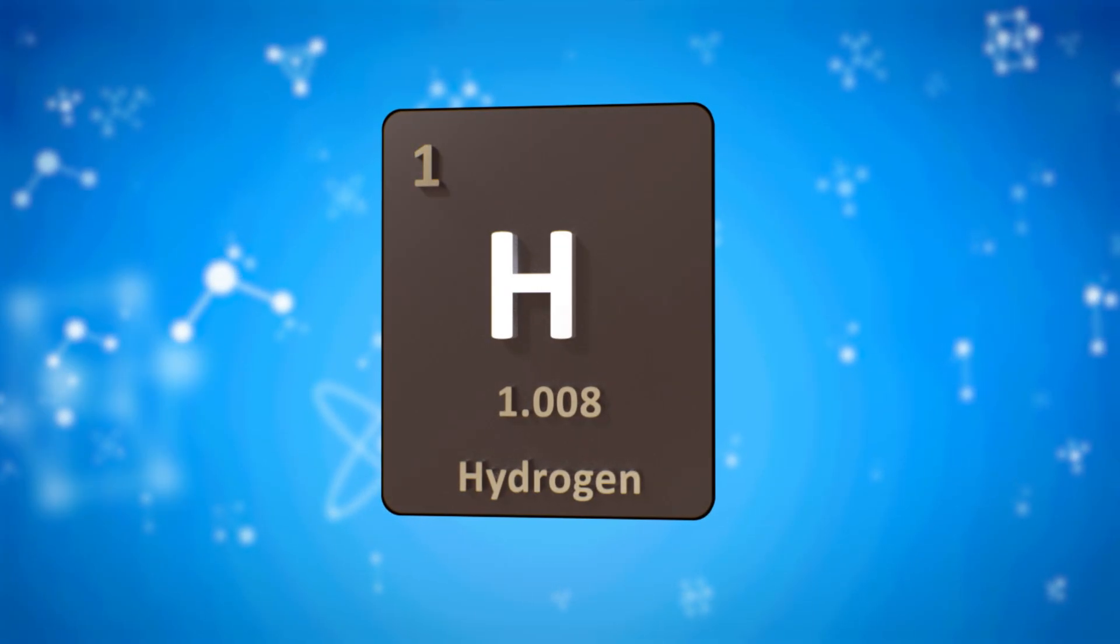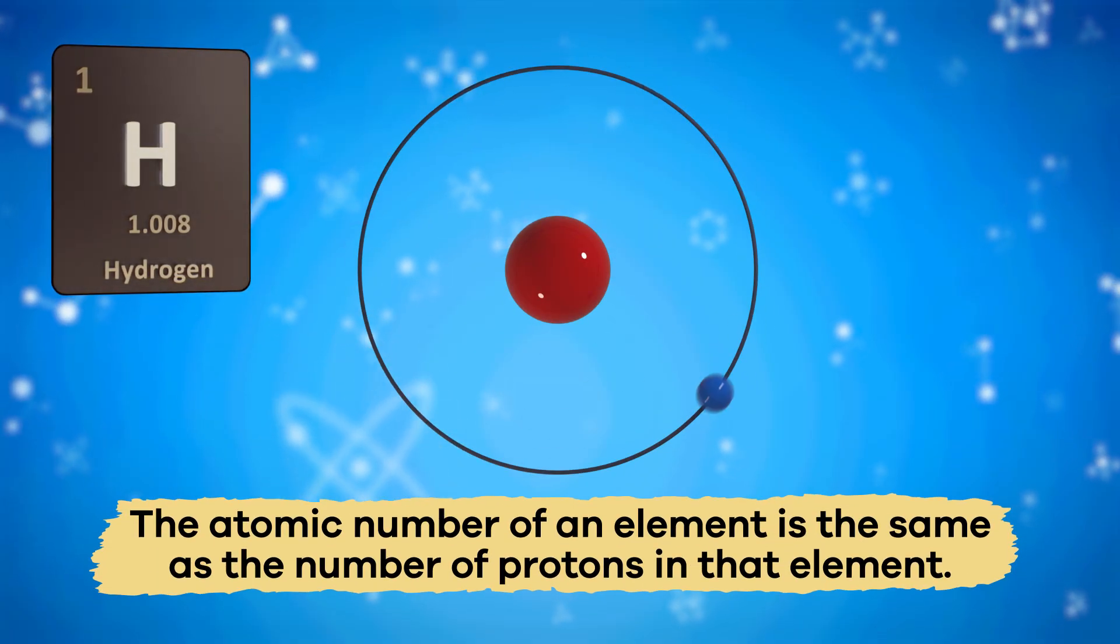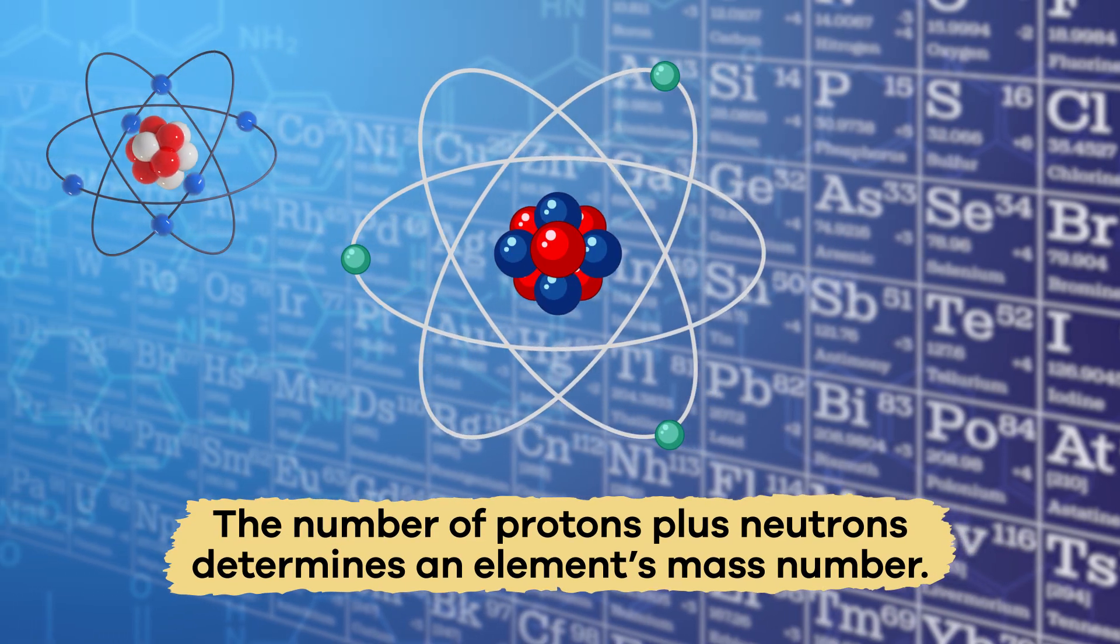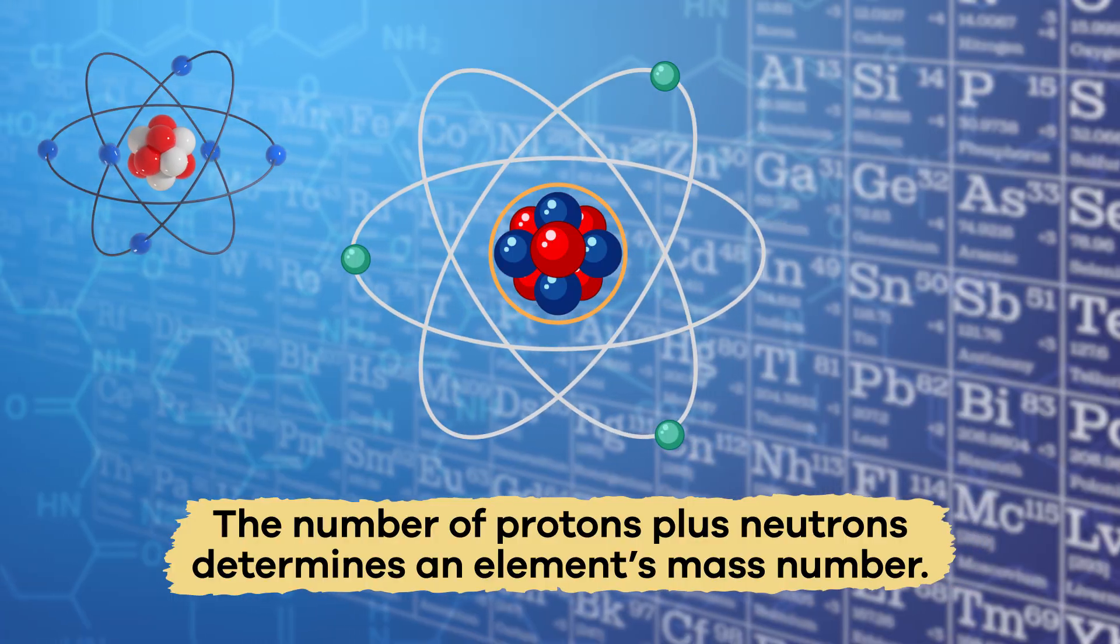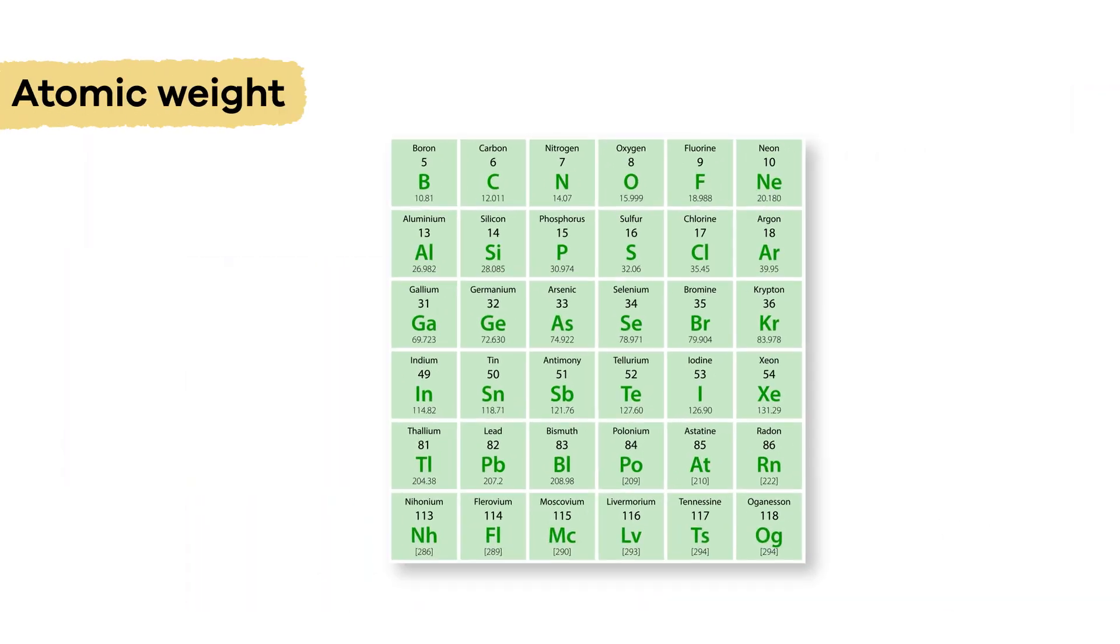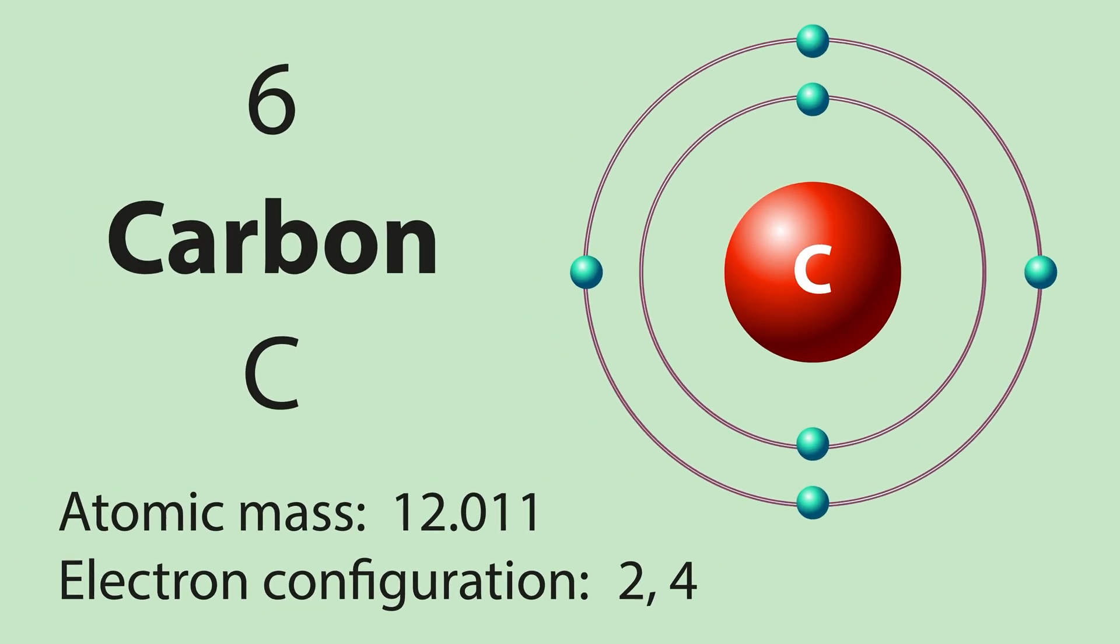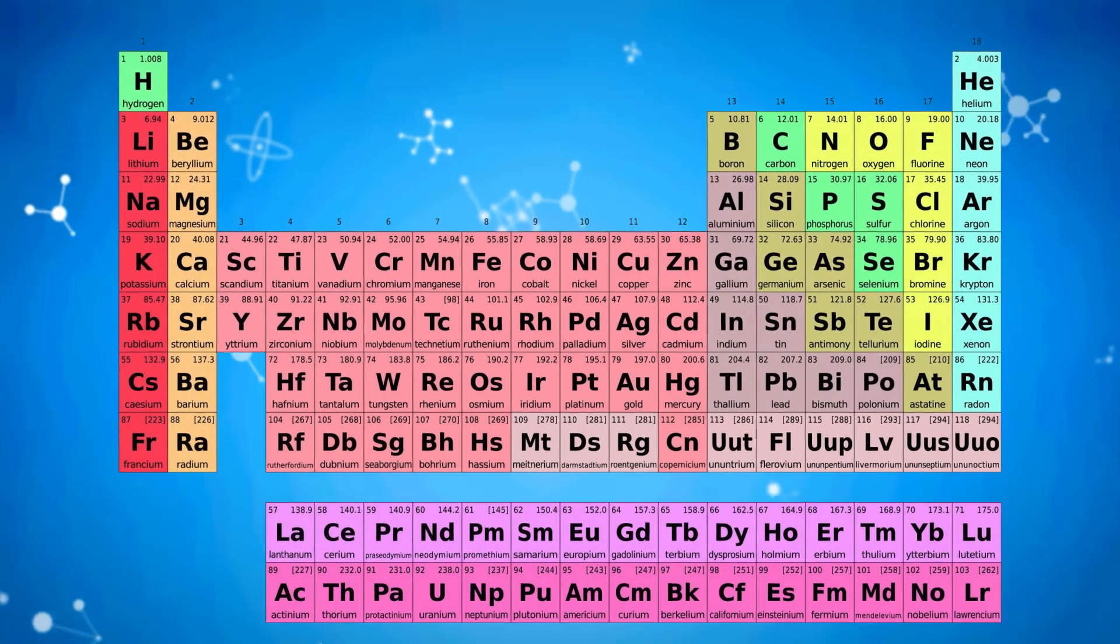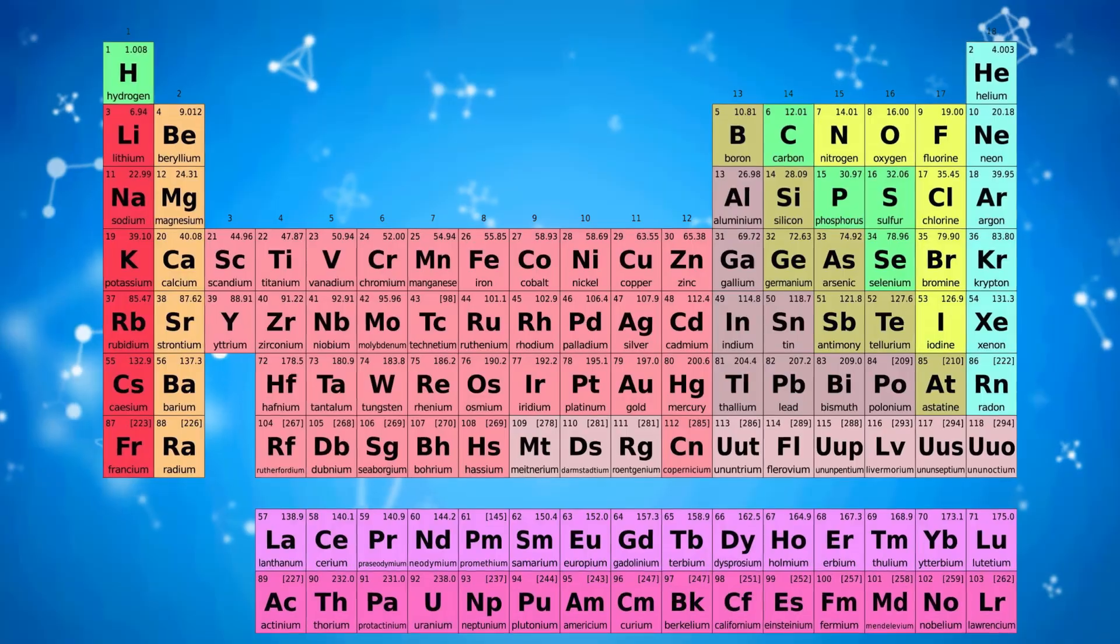Every element has an atomic number, which is the same number as the element's protons. The number of protons plus neutrons determines an element's mass number, and an element's atomic weight is determined by averaging the weights of all of the different versions or isotopes of a particular element.